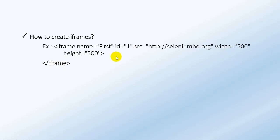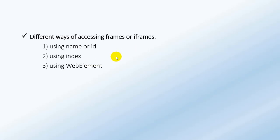We will discuss different ways of accessing a frame or iframe in Selenium WebDriver. First, by using the name or id of that frame, you can switch to the particular frame. Second, you can use the index to switch to the particular frame. Third, by using the web element locator, you can switch to the particular frame.